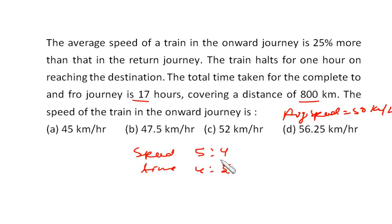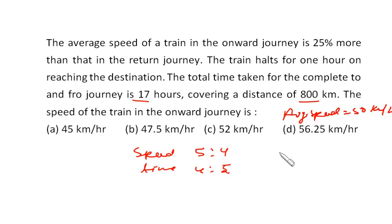We have the ratio of speeds of the to and fro journey. To find the speed of the train in the onward journey, it is total distance by total time. The total one-way distance is 400 km and the time taken is the 4 by 9 part of the total time — that is, 4 by 9 of 16 hours, since it is taking a halt for 1 hour.